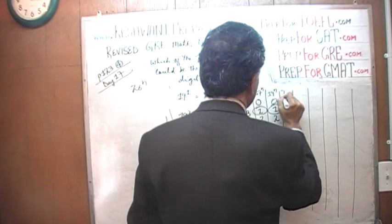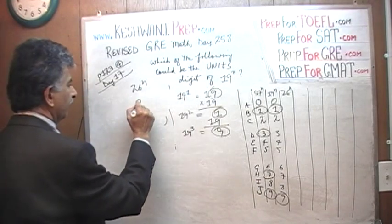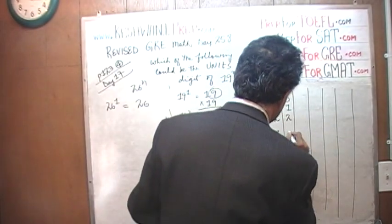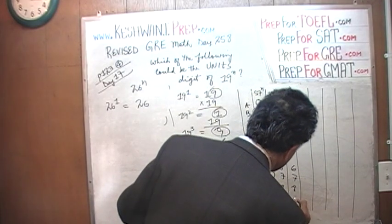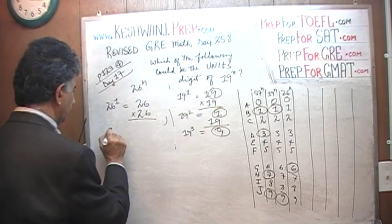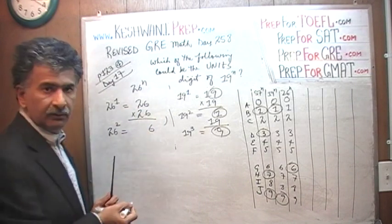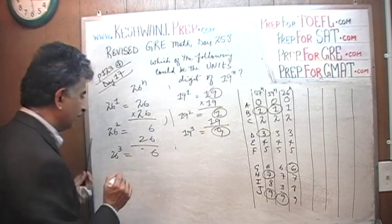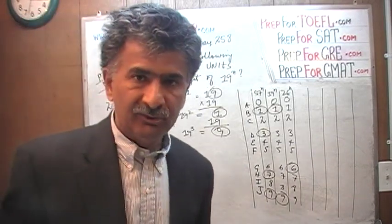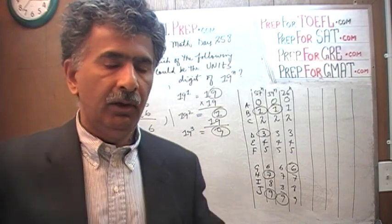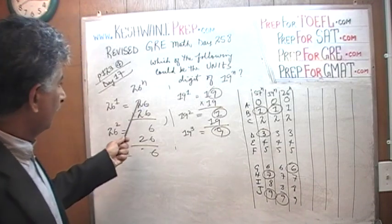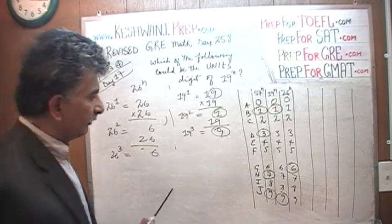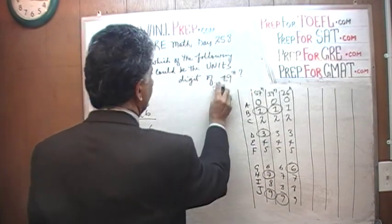Let's do one more: 26 raised to N. So 26 raised to 1 ends in a 6. Multiply by 26 again — 6 times 6 is 36 — it ends in a 6 again. Multiply one more time, and again it ends in a 6. So 26 raised to any power always ends in a 6 — that was a straightforward one.